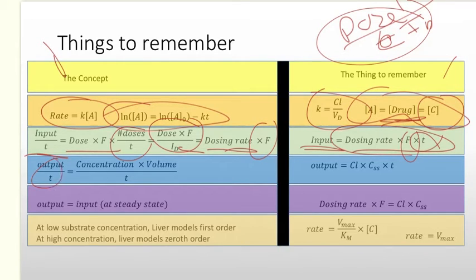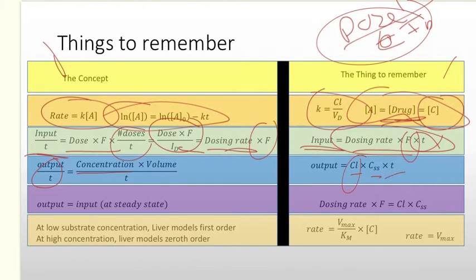For output over time: concentration times volume gives mass, so concentration times volume divided by time is the output over time. The concentration would be the steady-state concentration, the volume term is the clearance rate — which gives volume over time — and multiplying by time cancels out the time values. At steady state, output equals input.